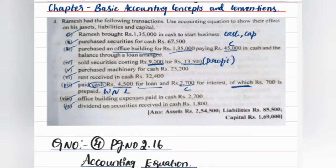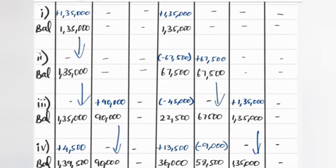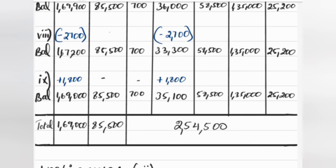The last transaction: dividend on securities received in cash. This is income. Dividend on securities received — ₹1,800 plus ₹1,800. Since this is income, it goes to capital. So plus ₹1,800 to capital and plus ₹1,800 to cash.